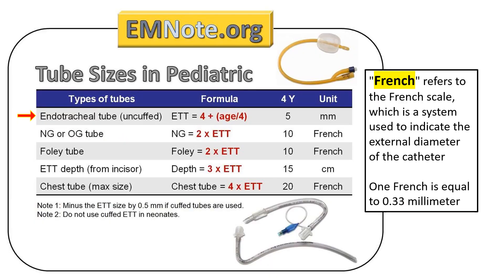Endotracheal Tube Size Estimation: The formula for selecting an uncuffed endotracheal tube size for pediatric patients is calculated by dividing the patient's age by 4 and then adding 4. Endotracheal tubes are measured in millimeter inner diameter. For cuffed endotracheal tubes, it is recommended to use a tube 0.5 mm smaller compared to the uncuffed tube.